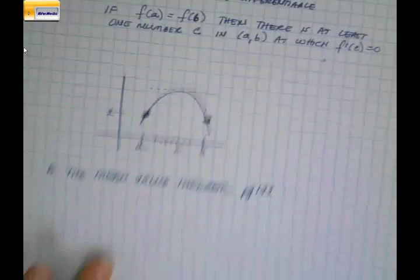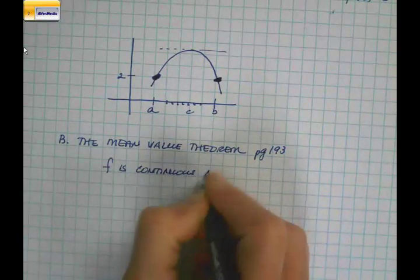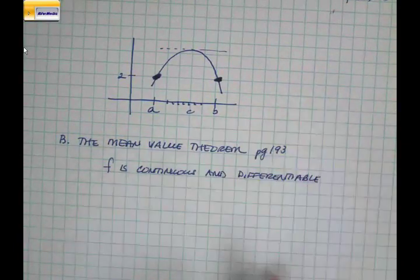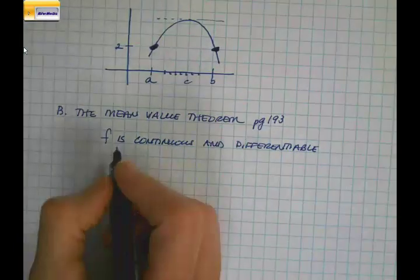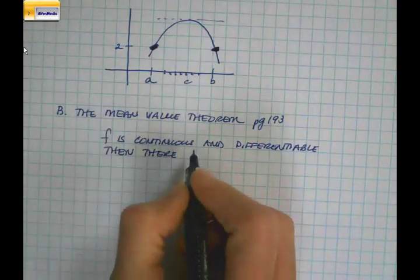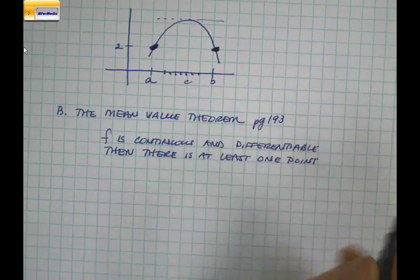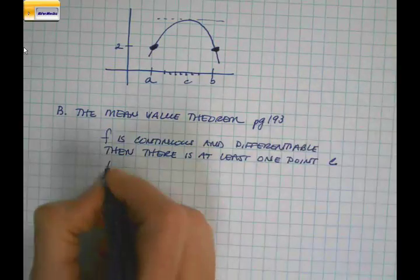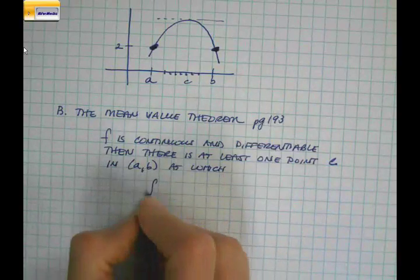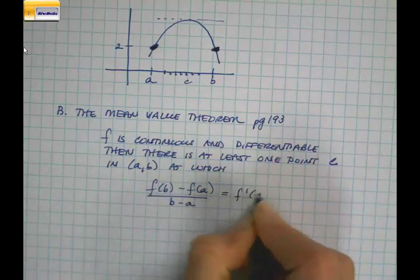Let me write it down. So again, we start off knowing that f is continuous and differentiable — they're guaranteeing a nice, pretty function with no major issues. Then there is at least one point along the curve, one point where the x value equals c in the interval between a and b, at which f of b minus f of a over b minus a equals f prime at c.